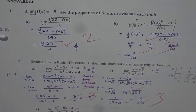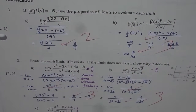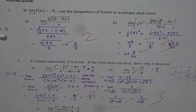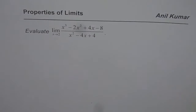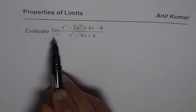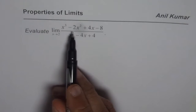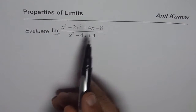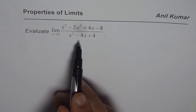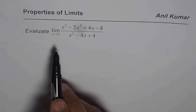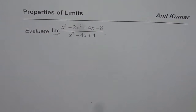I am Anil Kumar, sharing with you the solution of some test questions. Let us do question number 2a now. The question is: evaluate the limit of x cubed minus 2x squared plus 4x minus 8, divided by x squared minus 4x plus 4, as x approaches 2.